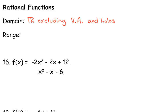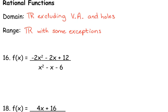Now, our range — you really have to look at the graph. Your assumption is always that it is all real numbers, with some exclusions, because you're just going to have to look at the graph. We'll look at several graphs here so you can see some exceptions. It depends on the rational function, because if you remember, we had several different shapes and types that we ran into.